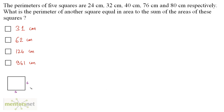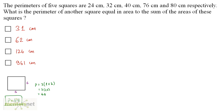First of all, what is the perimeter of a square? A square is very similar to a rectangle, just that its length and breadth are of the same size. The formula for the perimeter of a rectangle is twice the length plus breadth. For a square, length is s and breadth is s, so that's 2 times 2s, which is 4s. The perimeter of a square is equal to 4 times its side.